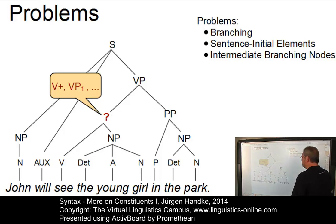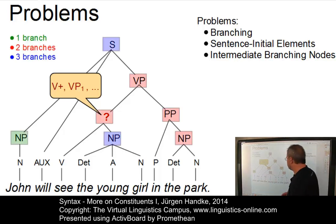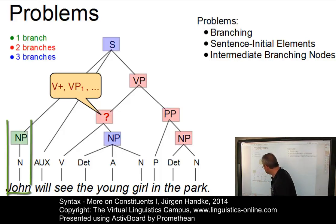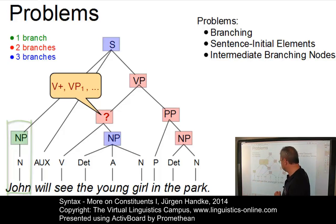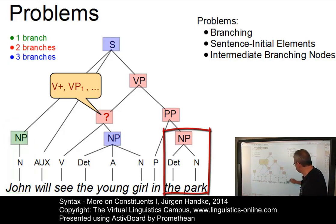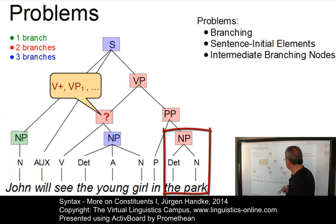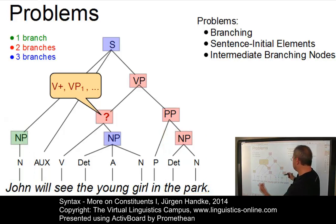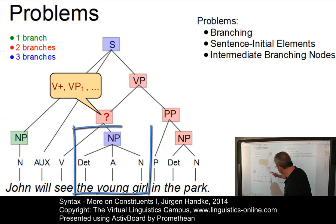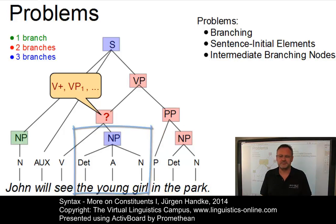Or how many branches should a mother node have? One, as in this noun phrase 'John'? Two, as in this noun phrase 'the park' and all the other mother nodes marked in red? Or even three, as in this noun phrase 'the young girl'?